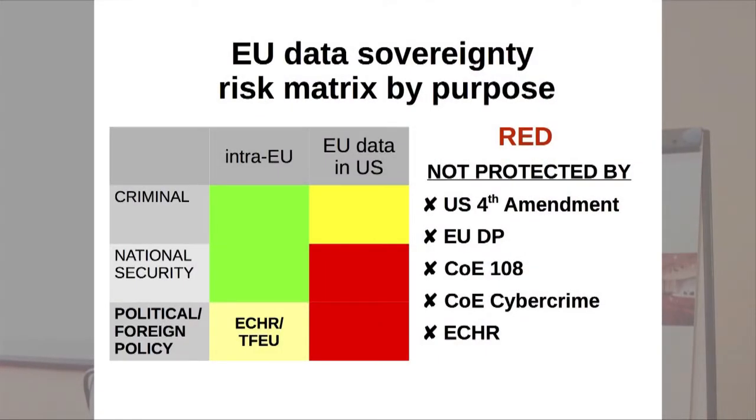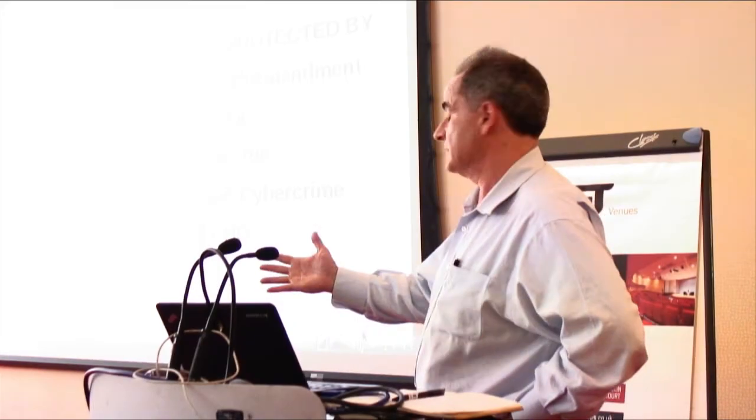So, I've got here a little matrix, a risk matrix of the categories of data. On the left, I want to make the point that we've really got three categories of data. There's criminal stuff. There's sort of genuine, bona fide national security stuff. And then there's this political and foreign policy stuff. So, roughly speaking, we're okay with intra-EU, the criminal national security stuff. In the top right, it's pretty dodgy for things like passenger name record data. There's big, big problems in those two red areas, because that's totally unprotected. You're not protected by the Fourth Amendment. You're not protected by EU data protection. You're not protected by Council of Europe Convention 108. You're not protected by the Cybercrime Treaty. And you're not covered by ECHR.